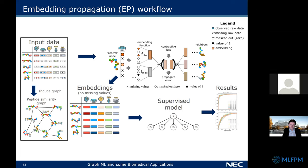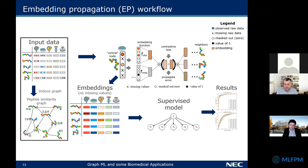Next question: when you presented the first application, you showed classification of entire networks — where many networks are the input and you want to classify them entirely, like chemical compounds. Could you elaborate on methods for that? Are they mostly supervised or unsupervised?